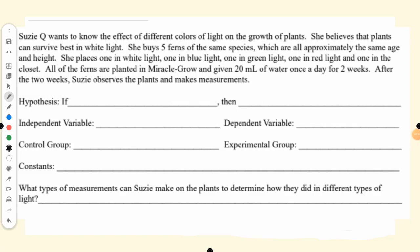On this activity, we're going to be identifying the different parts of an experiment. Suzy Q wants to know the effects of different colors of light on the growth of plants. From here we can already tell the thing that we will be manipulating. The thing we're manipulating is the different colors of light, so that is our independent variable because we are manipulating that.